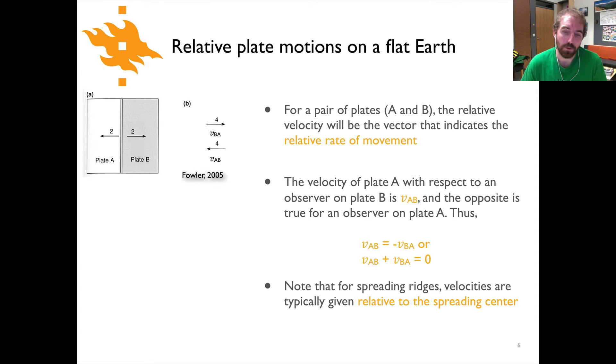One thing to note here is that when we're talking about spreading ridges, the velocities that you'll see listed are typically given as a velocity relative to the spreading ridge. If you look at the upper part of the figure, you'll see velocities of two on either side of the spreading ridge in the middle, which means that the relative velocity to an observer on either one of the plates would be two times the velocity of the spreading.